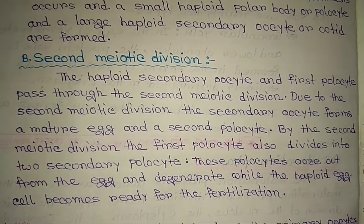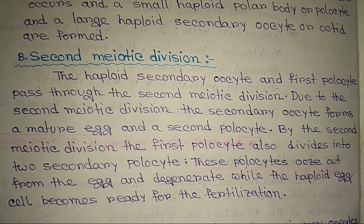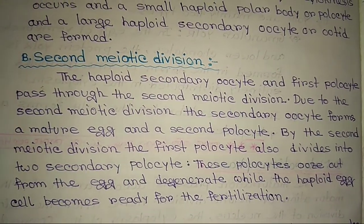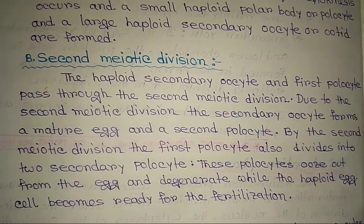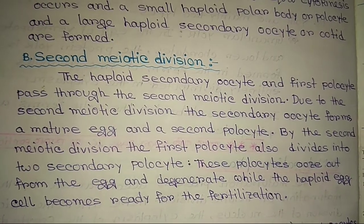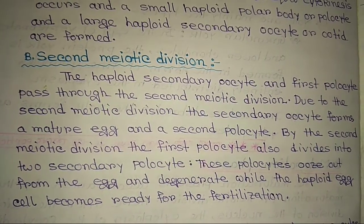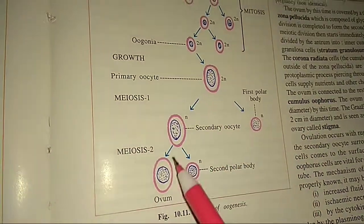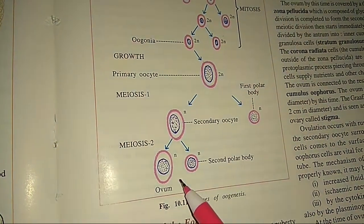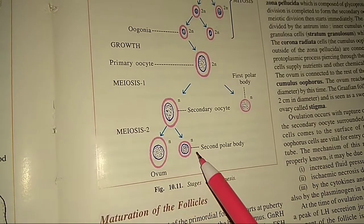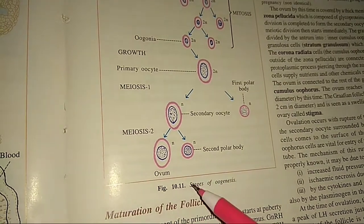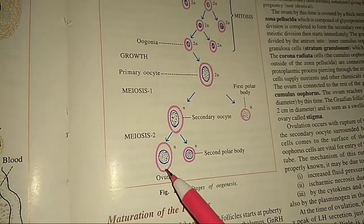In the second meiotic division, the haploid secondary oocyte and the first polocyte pass through the second meiotic division. Due to the second meiotic division, the secondary oocyte forms a mature egg and a second polocyte. By the second meiotic division, the first polocyte also divides into two secondary polocytes. These polocytes degenerate while the haploid egg cell becomes ready for fertilization.